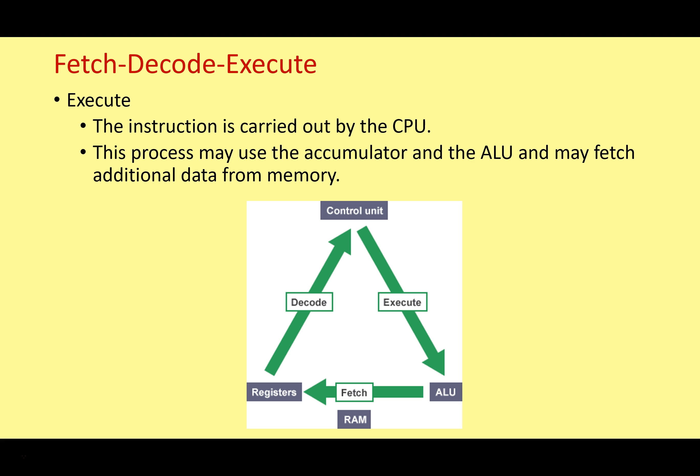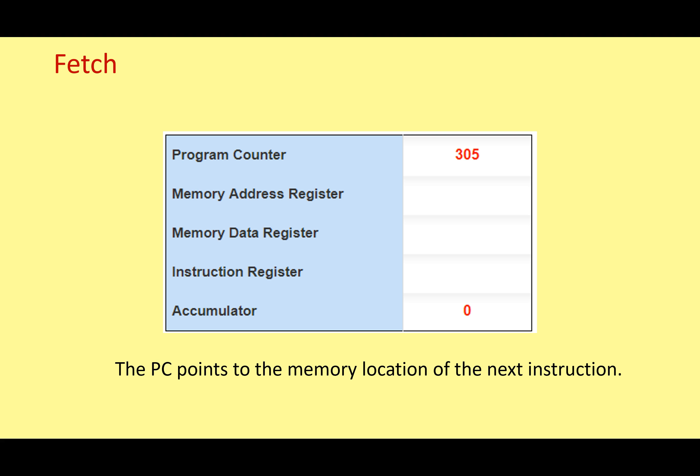So that's an overview of the fetch-decode-execute cycle. Let's go into more detail and look at what's happening at each individual stage. We're starting our program — most of the registers are empty, the program counter is pointing at the next instruction, and the accumulator is currently set to zero. Right now the program counter (PC) is pointing to the memory address of the next instruction to be fetched.